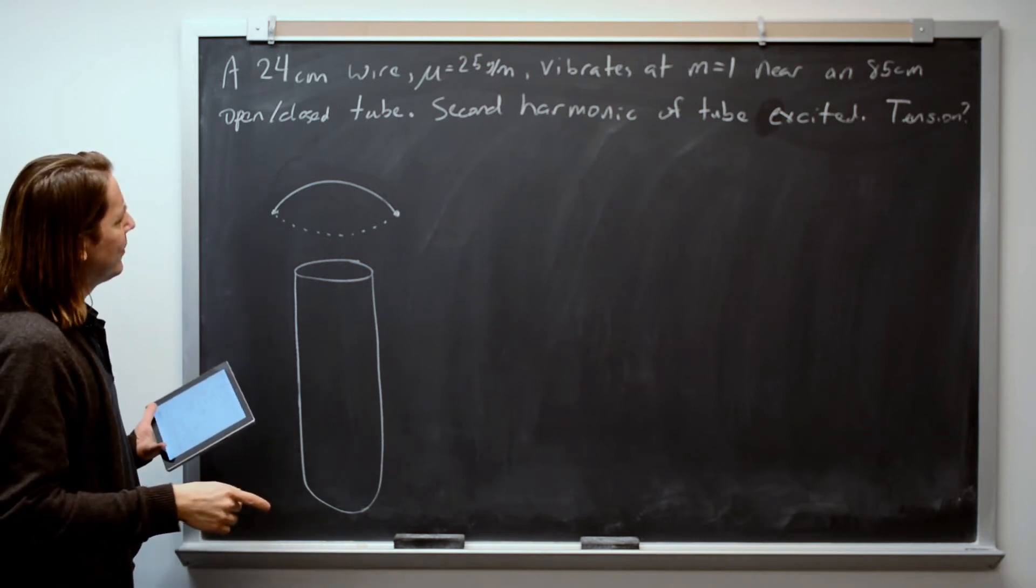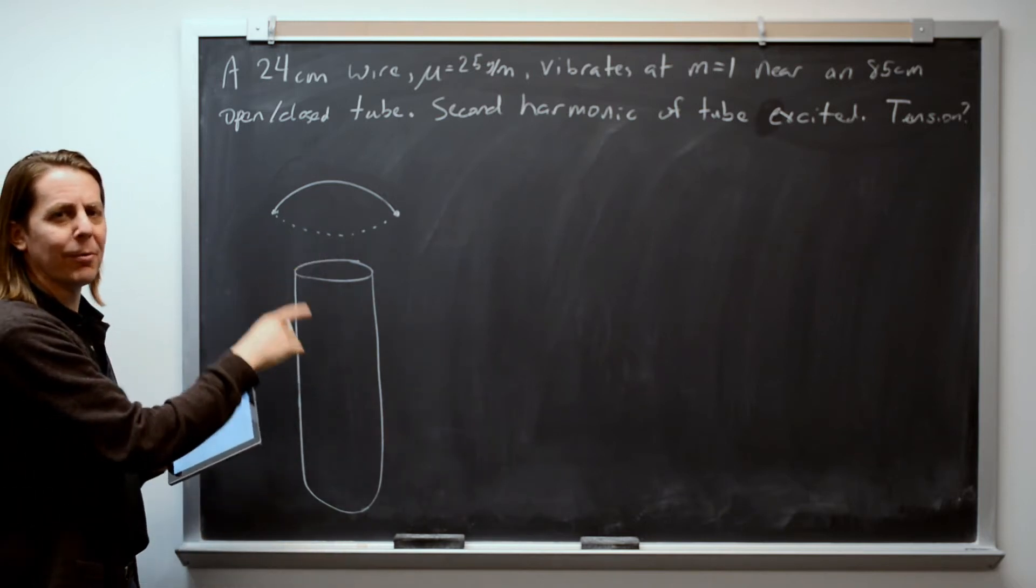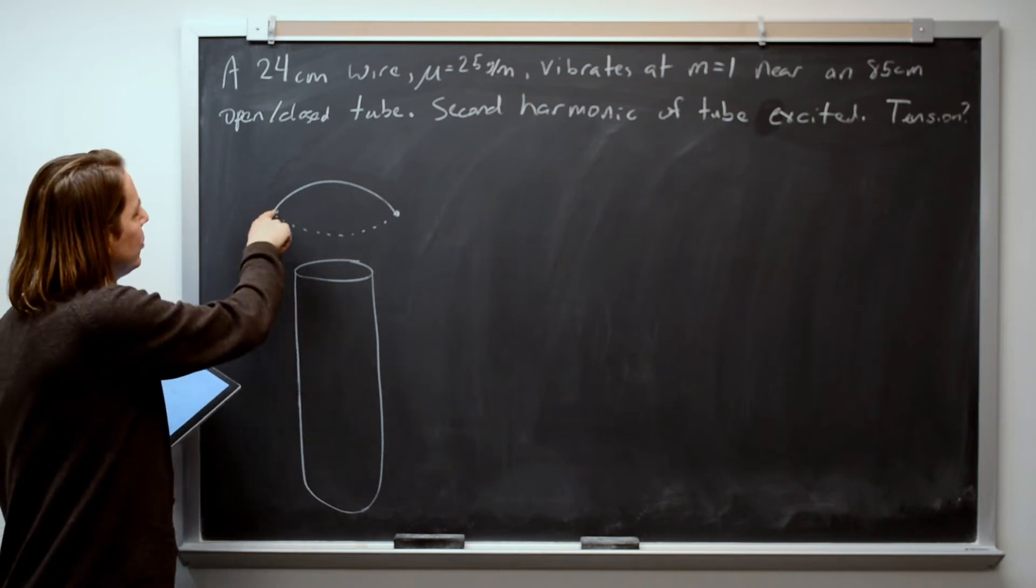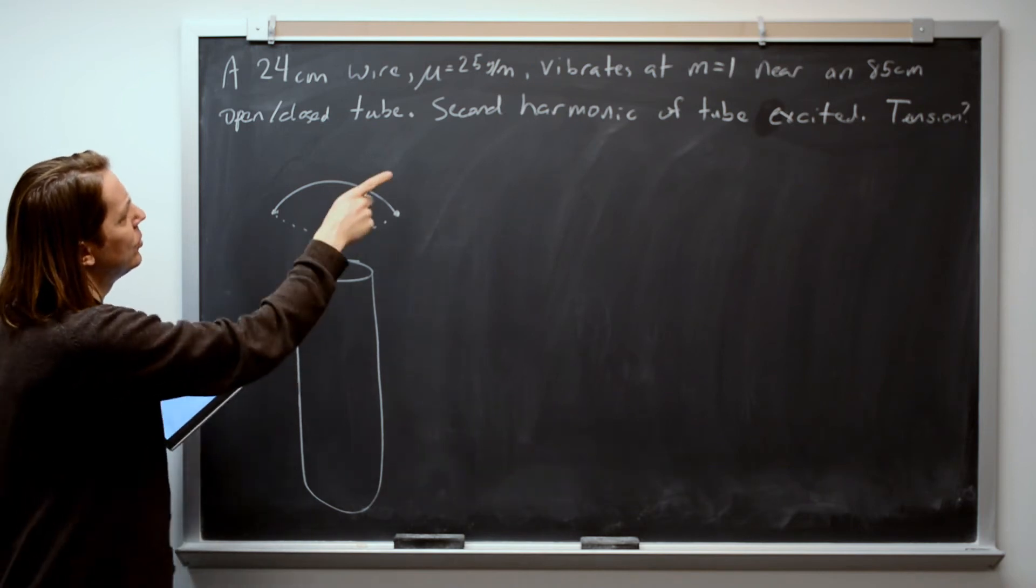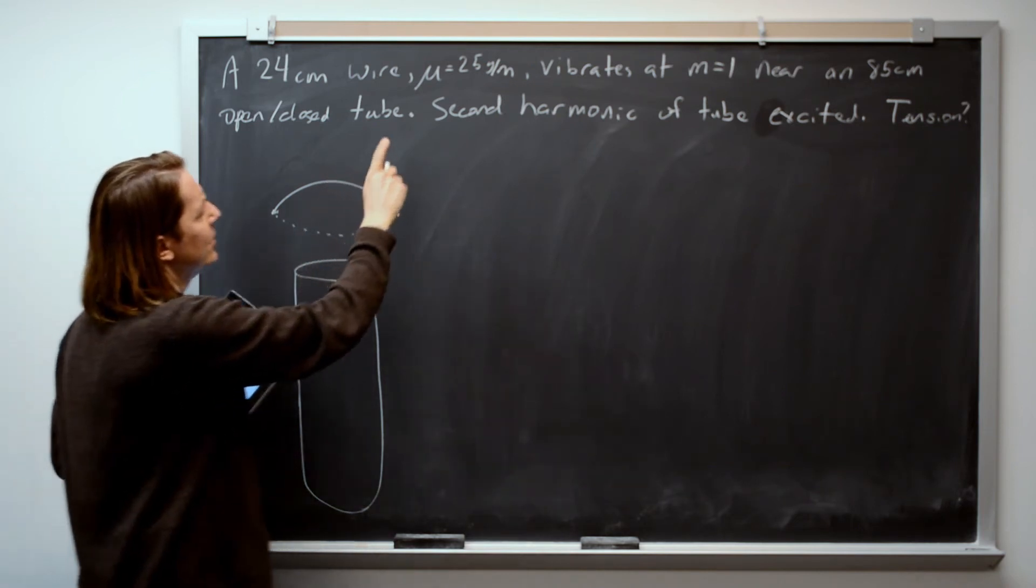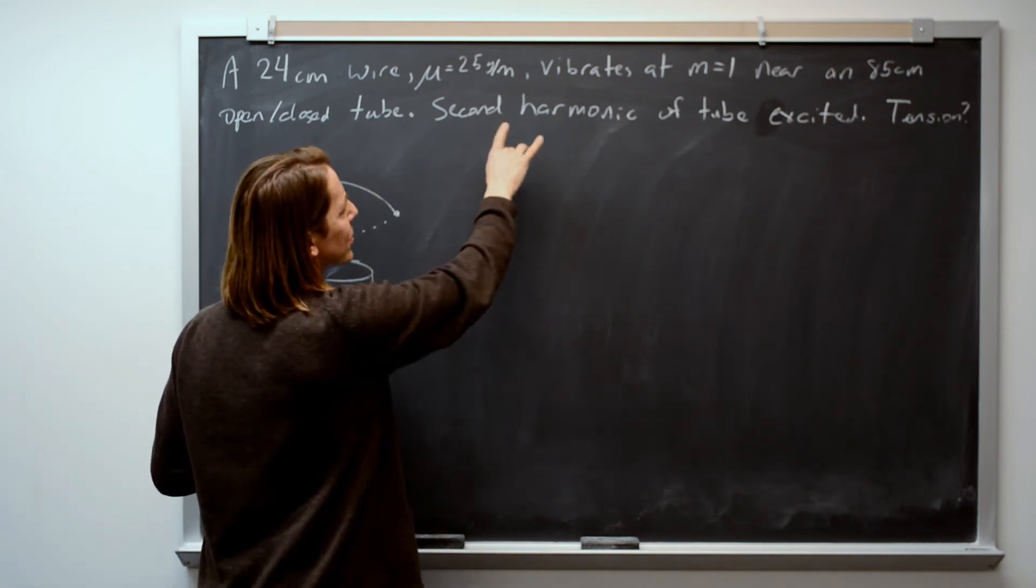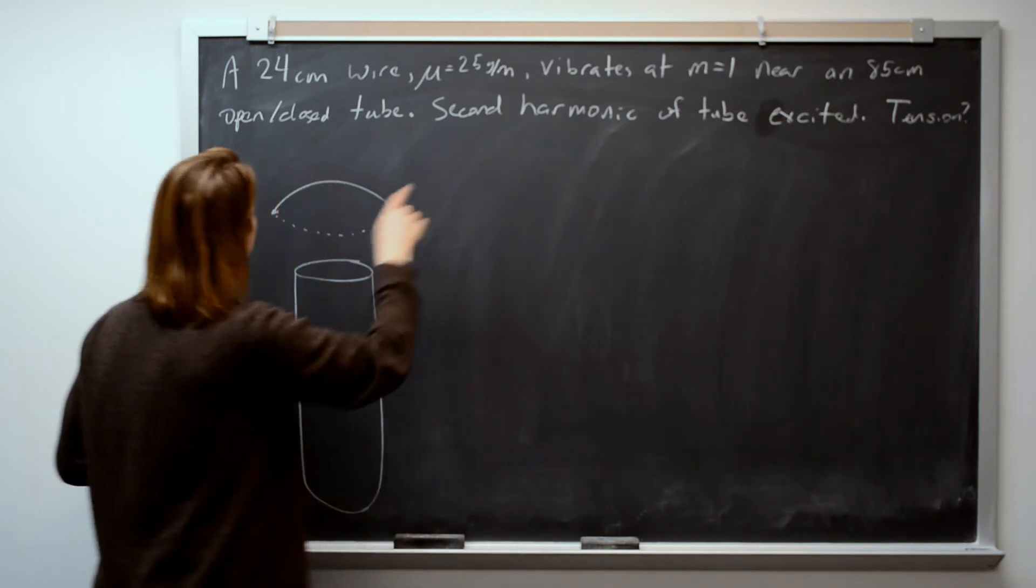So we're going to start by finding the frequency that this is all happening from the tube. So strings are always closed-closed because they're always clamped. Tubes can have various kinds of modes, and we're told this thing is hitting the second harmonic or the second frequency of the tube in its open-closed tube.